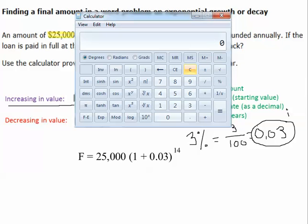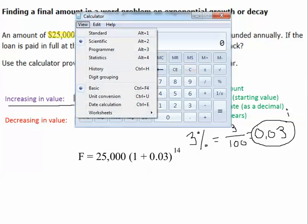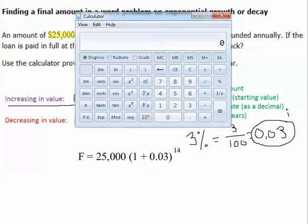Now, this is just a regular calculator off the computer. I am in scientific mode. If you go to view, you can actually go to scientific. Alright, so order of operations, I'm going to start inside my parentheses. So 1 plus 0.03. Then I'm going to do the exponent, which is raising it to the power of 14. So I'm going to hit x to the y, 14. Hit equal. And then I'm going to multiply that value by the 25,000. That's my principal. And we get the answer, $37,814.74.